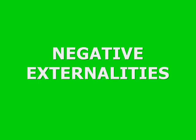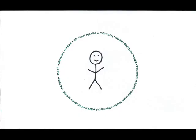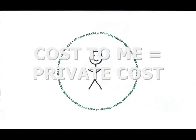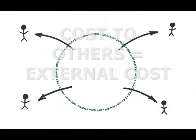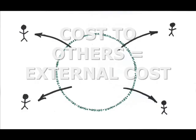Negative externalities occur when a decision or activity imposes costs on anyone not involved in making that decision. Think of it this way. Every decision involves some cost to the decision-maker—that's the private cost of your choice. But sometimes the decision imposes costs on others as well, which would be the external cost.